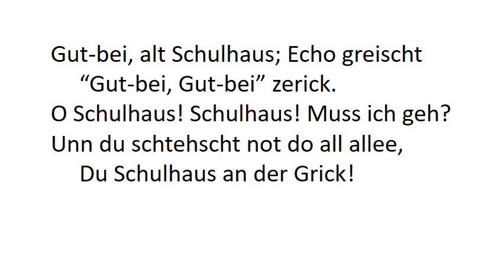Let me read the whole verse in Deitsch and then translate: 'Goodbye alt Schulhaus, echo grisht goodbye goodbye zrick. Oh Schulhaus, Schulhaus, muss ich gehe? Und du stehscht noh do all allee, du Schulhaus an de Creek.' Translation: Goodbye old schoolhouse, echo calls goodbye back. Oh schoolhouse, schoolhouse, do I have to go? And you still standing here all alone, you schoolhouse on the creek. A bit sentimental perhaps.